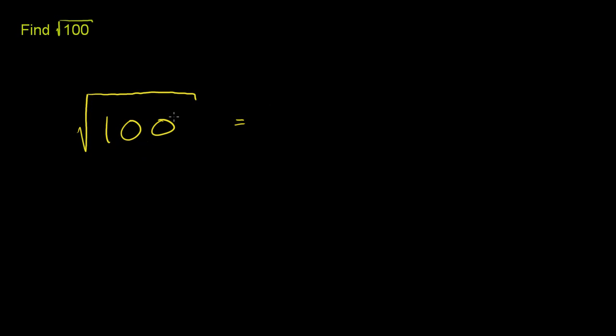So this is equal to, and let me write it this way. Normally you could skip this step, but you could write this as the square root of, and instead of 100, 100 is the same thing as 10 times 10. And the square root of something times itself, that's just going to be that something. This is just equal to 10.